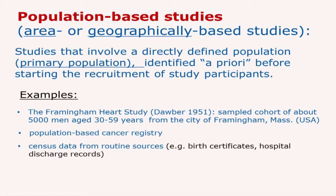Population-based cancer registries are also good examples. These are disease registries which aim at recording all cases of cancer arising in a given geographical area or population. Many routine sources collect population-based data — for instance, birth certificates in Italy, or hospital discharge records in which all eligible subjects are recruited.